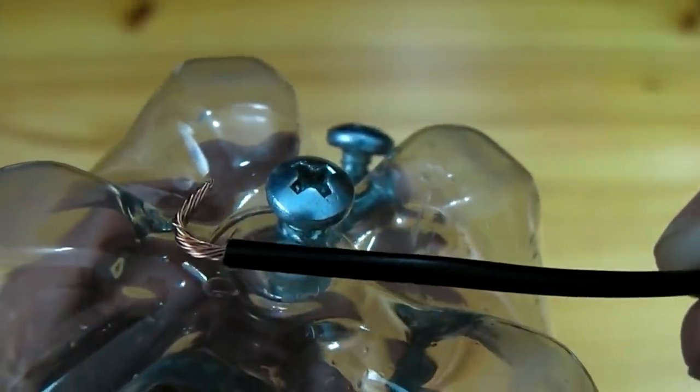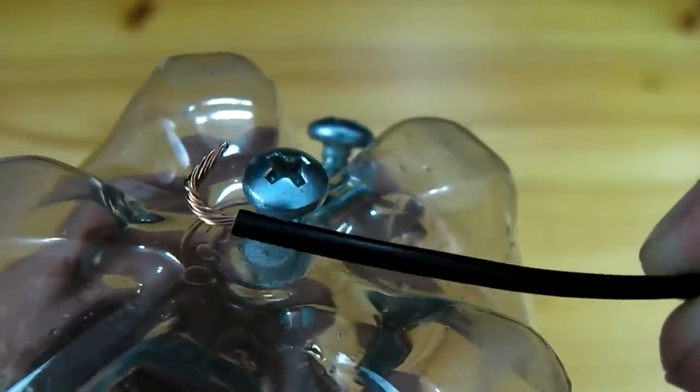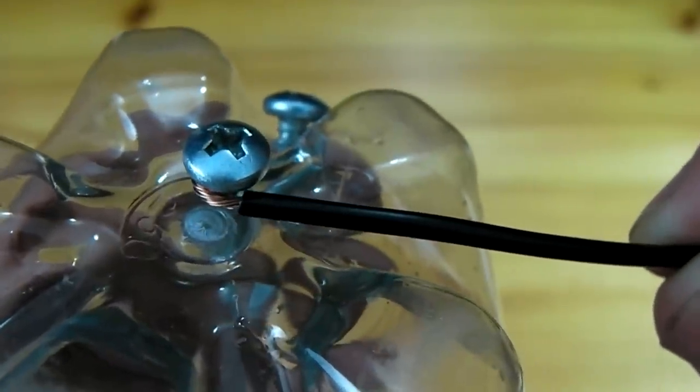Now before the screws are completely screwed in, take the end of a length of wire which is about 2 feet long and tighten down the screw head on the end.